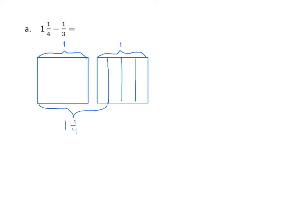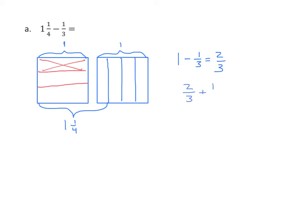This time, our subtrahend is 1 third, so I'm going to partition my whole into three equal parts using two horizontal lines. Since we're taking away 1 third, we'll put an x in one of those thirds. Now let's write the expression: 1 minus 1 third equals 2 thirds. Looking at the model, we see that we have 2 thirds left and we have 1 fourth. So if we combine the 2 thirds and the 1 fourth, we'll have our difference. We'll now write the expression 2 thirds plus 1 fourth.